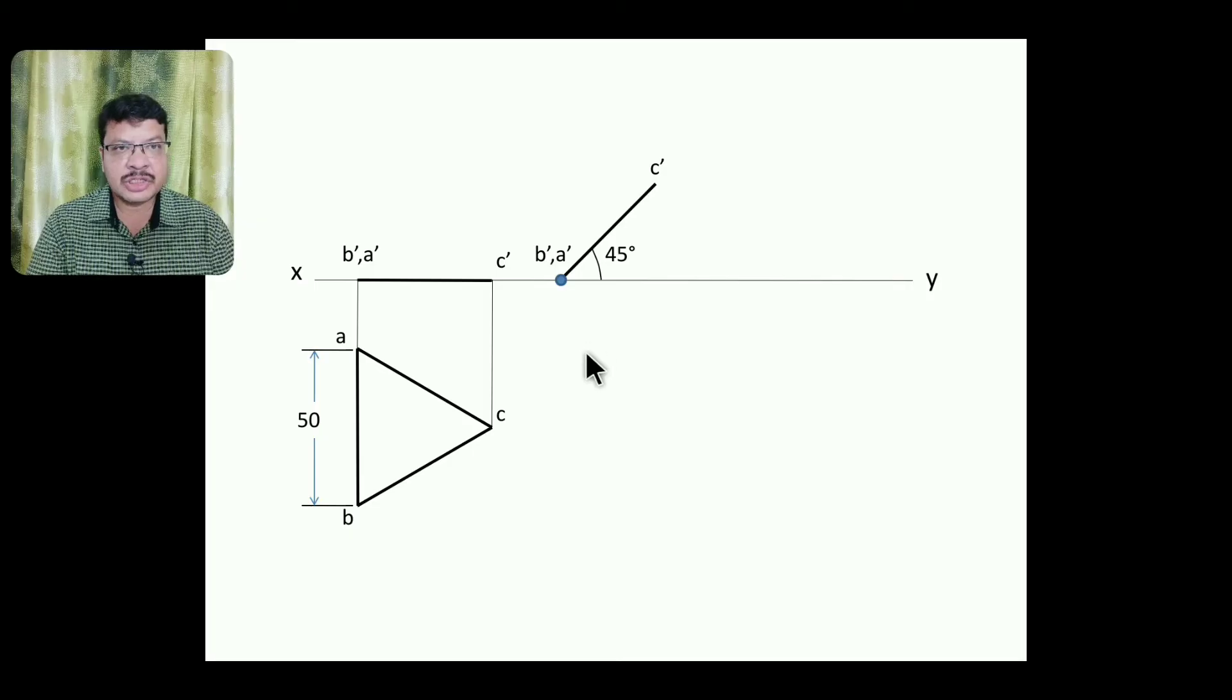To get the reduced shape in the top view, draw the projectors like this. This is the projector of B', A' from here draw the locus line. This locus of A', here you will get A' and here you will get B'. This is the projector of C'. If you draw the locus from C', here you are going to get C'. This is the reduced shape here.